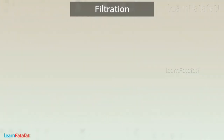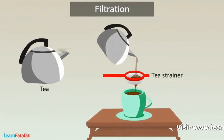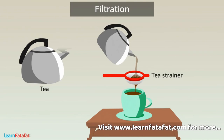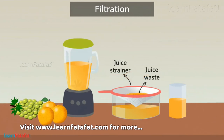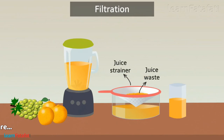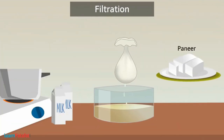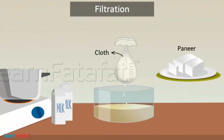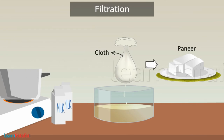After making tea, we use a strainer to separate tea leaves from the tea. We also use filtration for separating fruit juice from the solid material of the fruit. You might have seen the use of filtration while making paneer, where a cloth or strainer is used to separate solid paneer particles from the liquid.